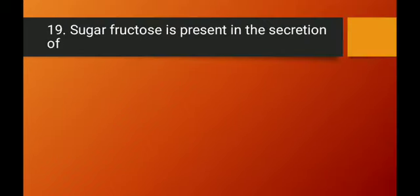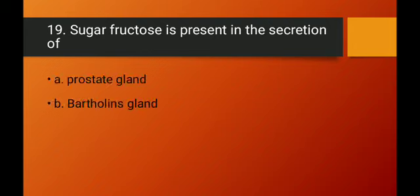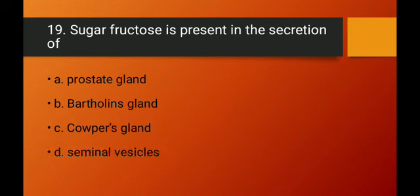Question number nineteen: sugar fructose is present in the secretion of which gland? Bartholin's gland is found in the female reproductive tract and aids lubrication, not fructose secretion. The correct answer is the seminal vesicle, which secretes fructose as an energy source for sperms.